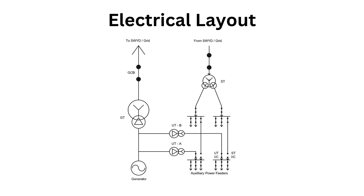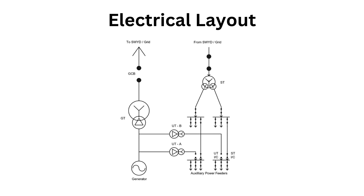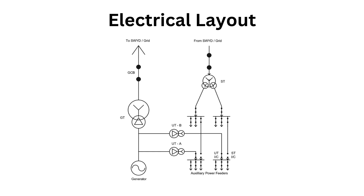You may wonder what happens when the generator is not in operation. At that time, power will be fed by the Station Transformer, which takes power from the grid. When the generator starts generating power, the unit bus is charged through the Unit Transformers and the incomer from the station bus is opened. This changeover is named the UT/ST changeover.